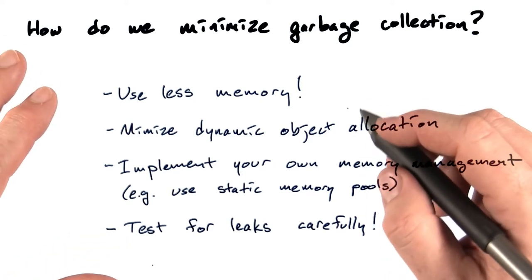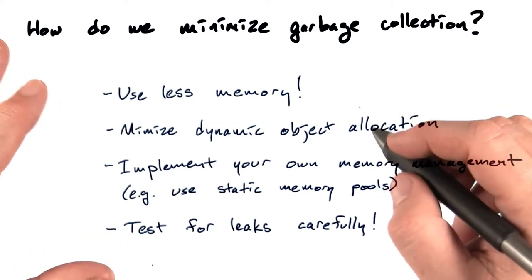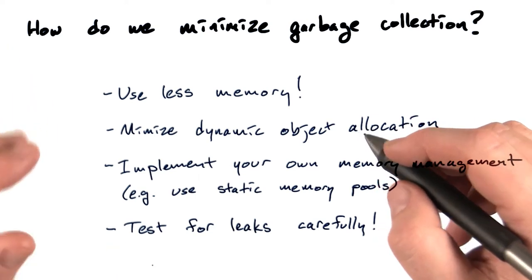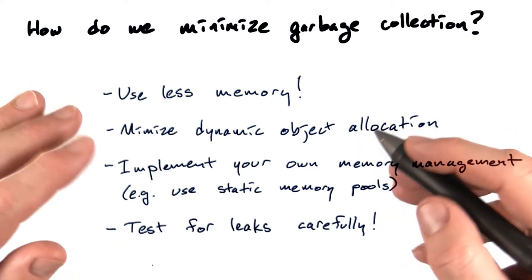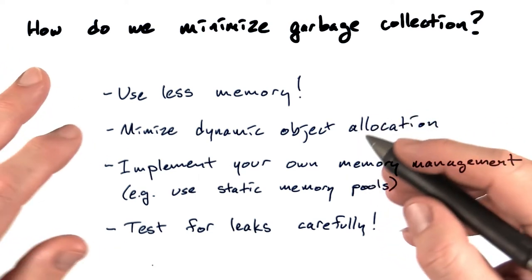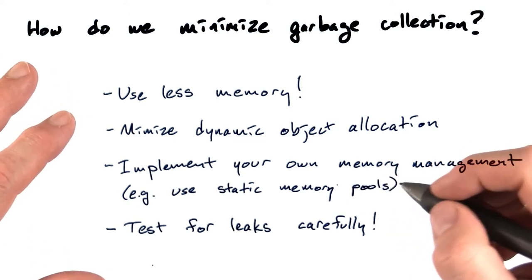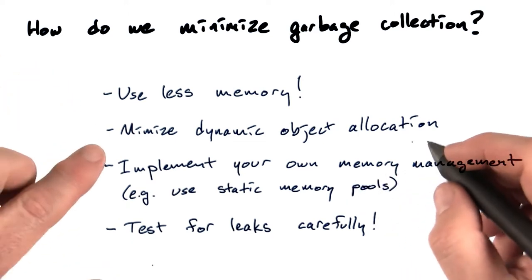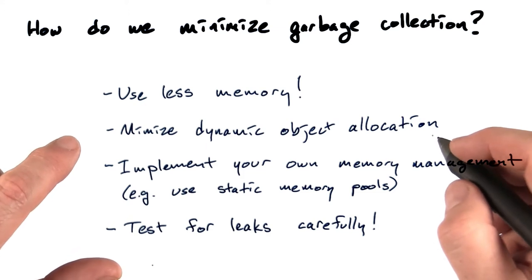If you can simply use less memory, that's great. But your goal is to minimize the dynamic object allocation and deallocation. Freeing up those dynamic objects is what the garbage collector is cleaning up after, so you really want to try to minimize dynamic object allocation.